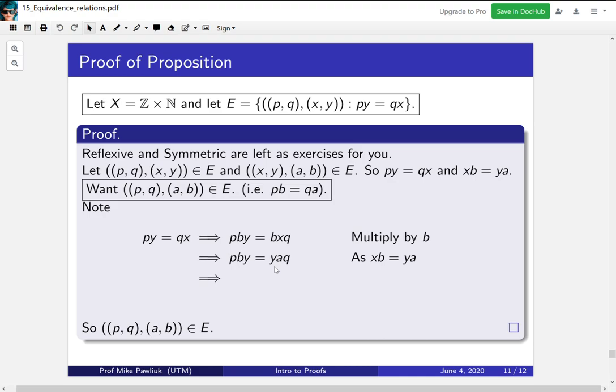Well, where does y live? Well, y was a second coordinate, and all the second coordinates are naturals. So then we can cancel it. And there we go, we got what we wanted.